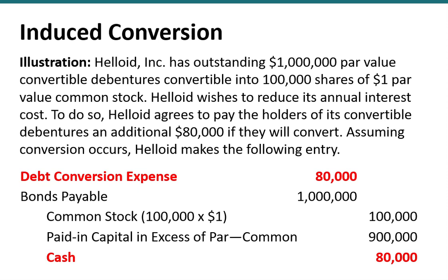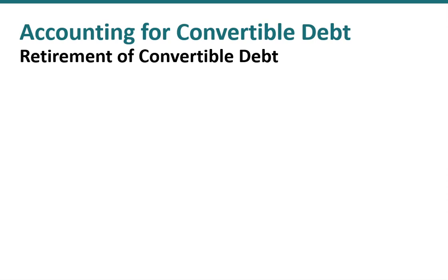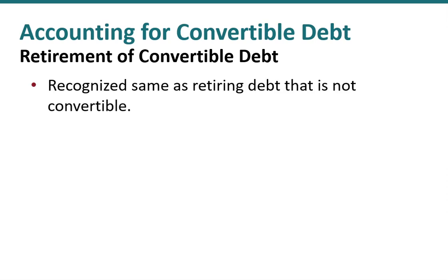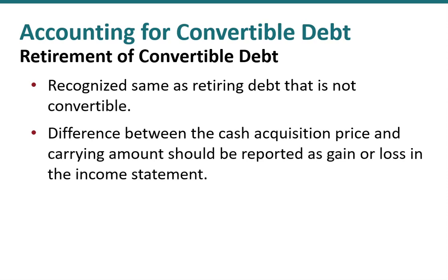Now, if the bondholders don't convert to common stock, then we're simply going to have a normal debt retirement. In that normal debt retirement, we account for it the same as retiring debt that's not convertible. Any difference between our acquisition price and the carrying amount of that debt will be reported as a gain or loss on the income statement.